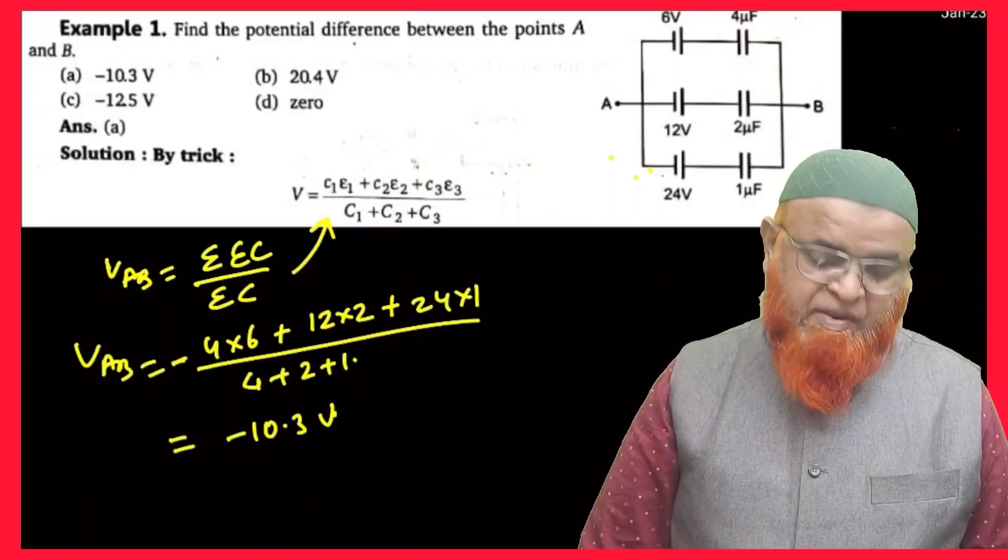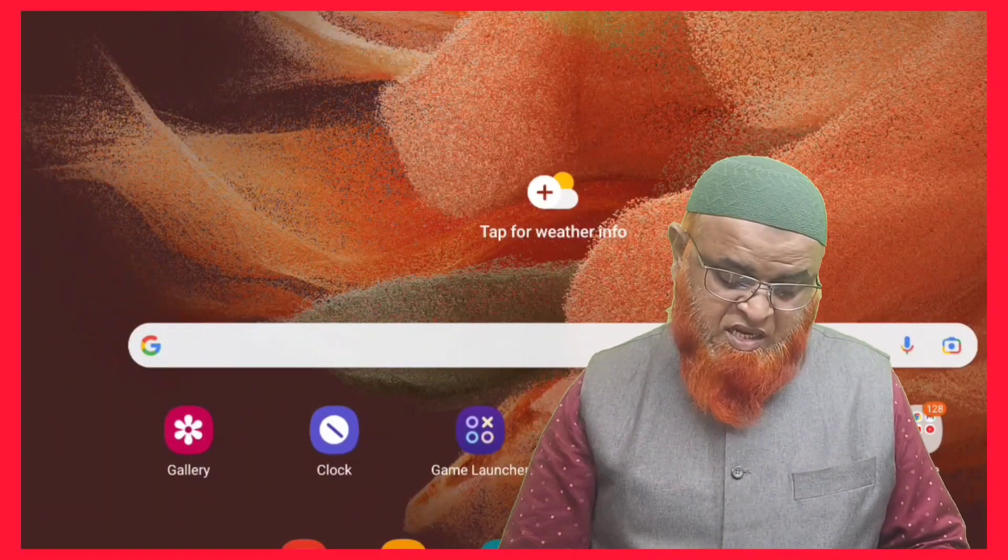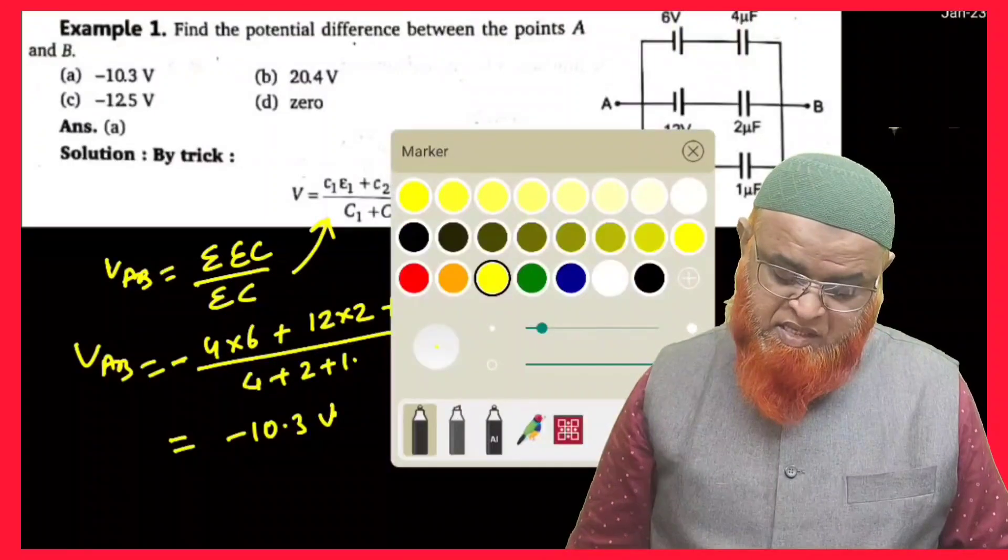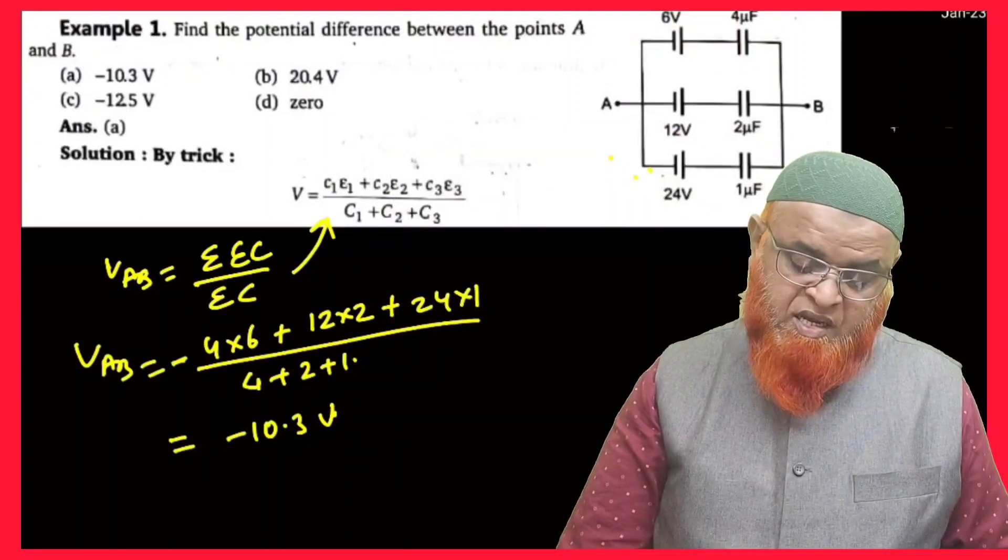Actually, you have to consider this as minus here. Why? Because if you see here, if you observe here, you will notice one thing. What is that? You are going to see that here.